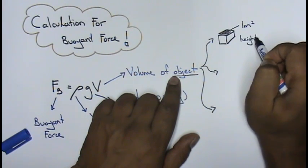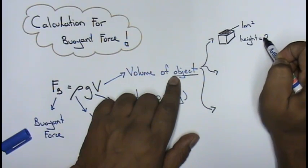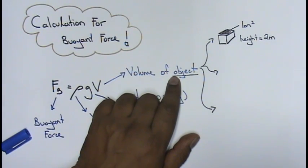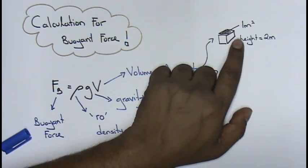And then over here I can tell you that the height of the object. Now given to you, height of object, let's just say is two meters. How do you find the volume for this?